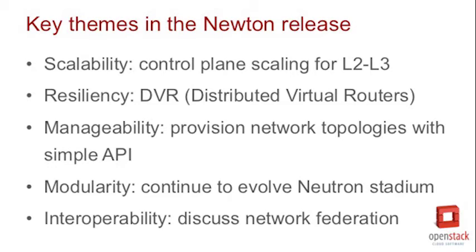Going up one level — the product work group and the OpenStack community have been using themes at a broader level to simplify buckets of focus for projects. The themes are scalability, resiliency, manageability, modularity, and interoperability. Which themes is Neutron focused on? We try to strike a balance and tackle all of these themes together. As far as scalability goes, the primary areas Neutron delivers are L2 and L3 services, and we've been working to identify and resolve control plane bottlenecks for both L2 and L3 operations.